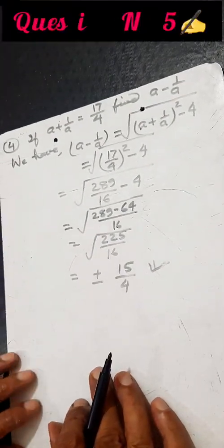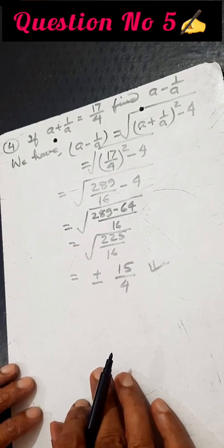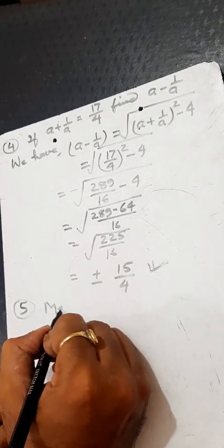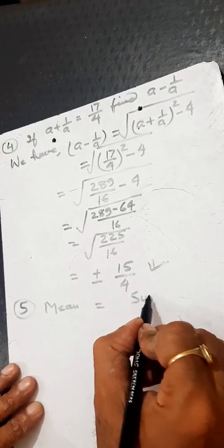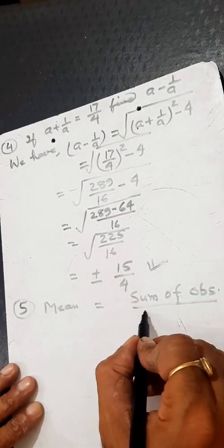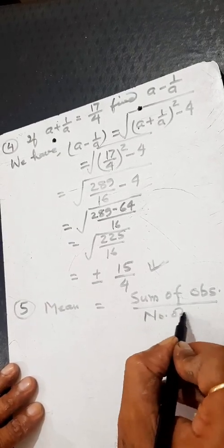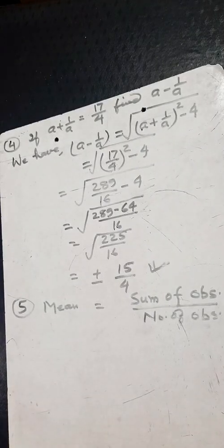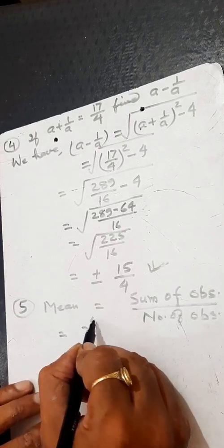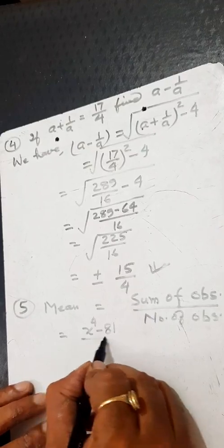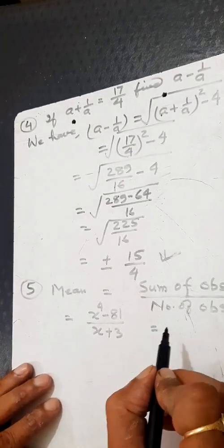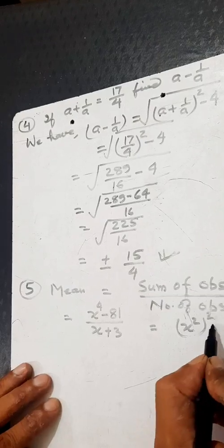The sum of x plus 3 observations is x to the power 4 minus 81. Find the mean. The mean equals sum of observations divided by number of observations. So the mean equals (x to the power 4 minus 81) divided by (x plus 3).